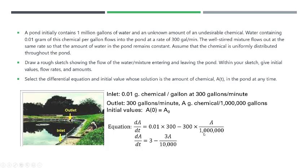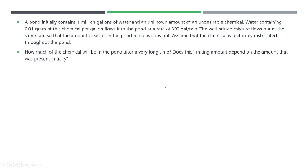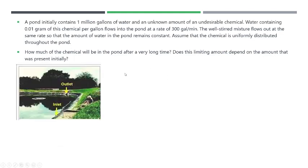You can simplify this. 0.01 times 300 is 3. And then when you multiply 300 times A and then divide by 1 million, you get 3A over 10,000. So this is our differential equation along with this initial condition, and that's question one.